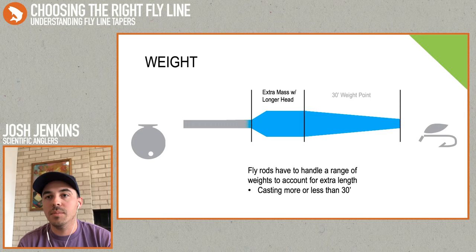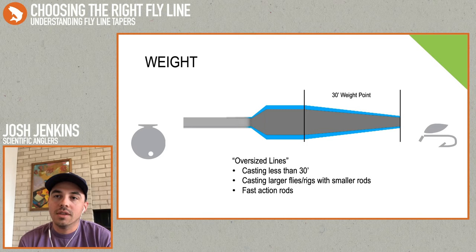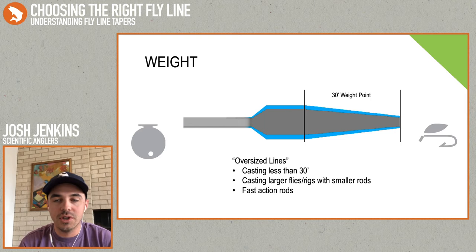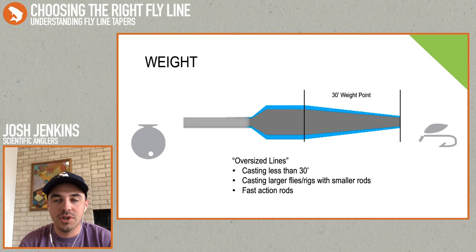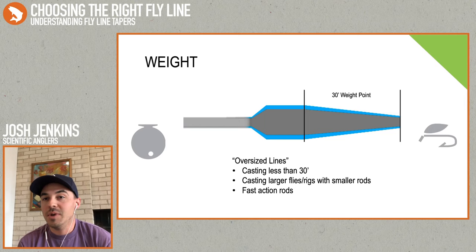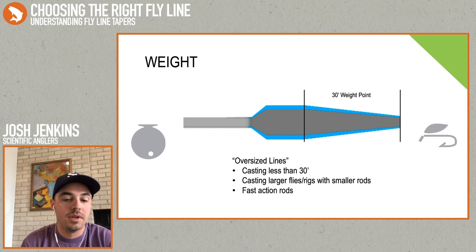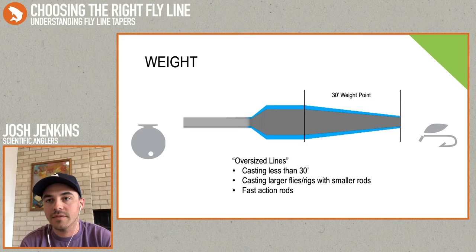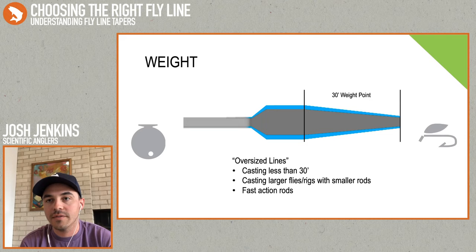We can use that to our advantage in line design by creating oversized lines for very specific purposes. It could be for scenarios where you're casting less than 30 feet — if I'm making a line designed specifically for creek fishing at 15 to 20 feet all day, a standard weight line doesn't have enough weight to load the rod, so I'll overweight it a bit. It's also a great option if you like to throw larger or more air-resistant flies on lighter rods — I like bass fishing with a 6-weight, and the only way I can throw a big hair bug or large streamer is with a 7 or 8-weight line. And finally, the best reason for buying an overweighted line is to tame fast-action rods — by overweighting a little bit, it just makes it a little easier to manage for most people.